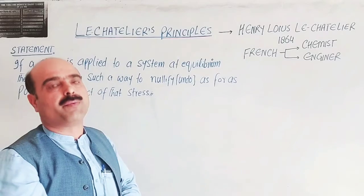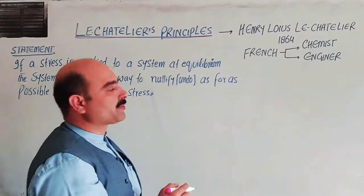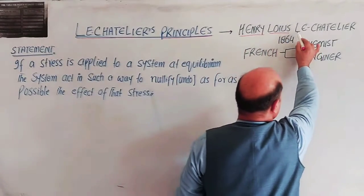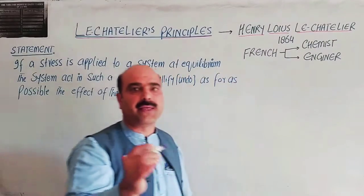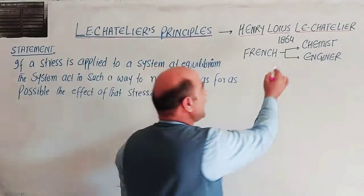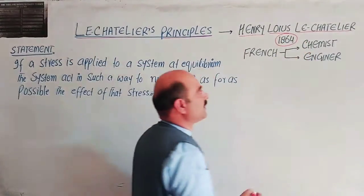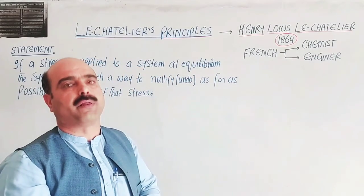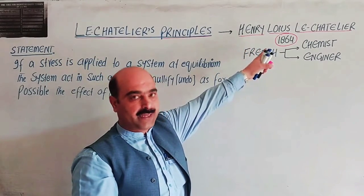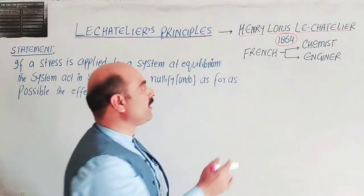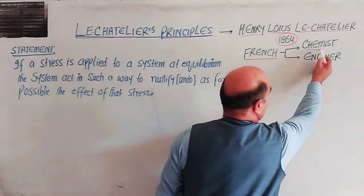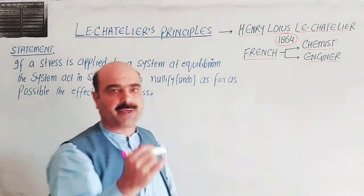These principles are about reversible systems and equilibrium. These principles were presented by Henry Louis Le Chatelier in 1864. Le Chatelier was a French chemist as well as an engineer.